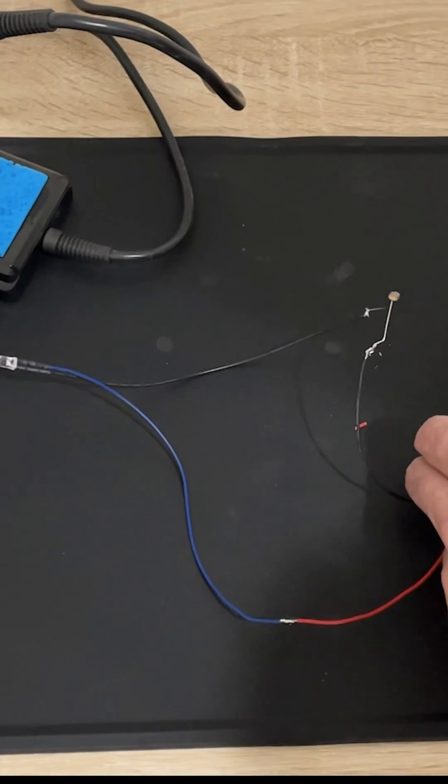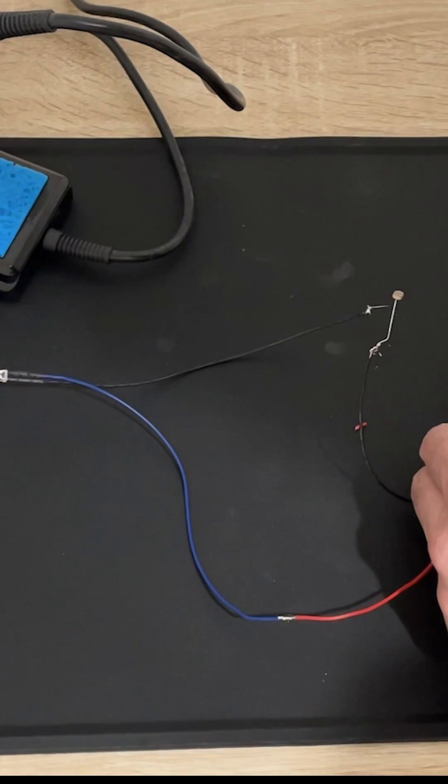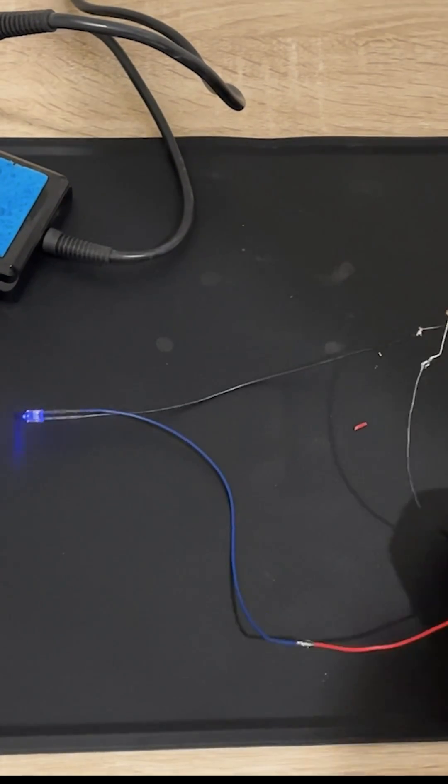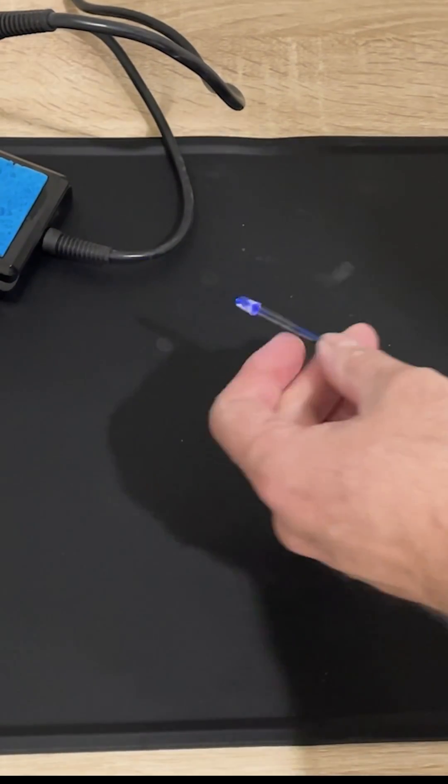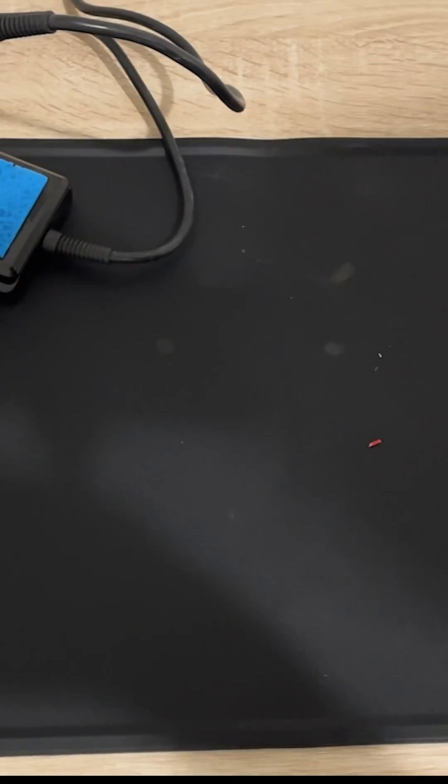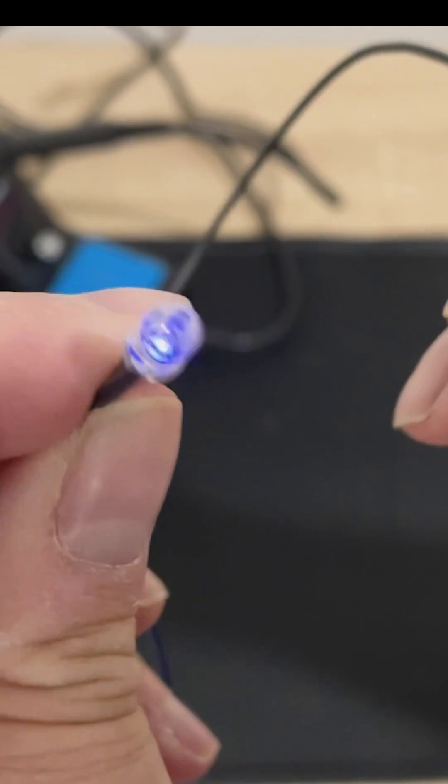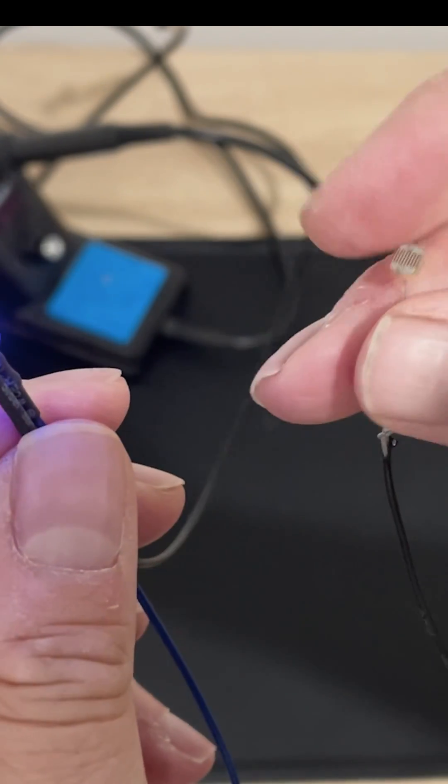So let's put our battery in and you see it lit up as soon as the battery even touched it. We can see here the LED is bright. As soon as we cover it up, it starts dulling.